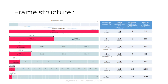Each 1 millisecond sub-frame contains slots, where each slot has 14 OFDM symbols. The sub-frame is divided into two slots of 500 microseconds each — Slot 1 and Slot 2 — both containing 14 symbols.